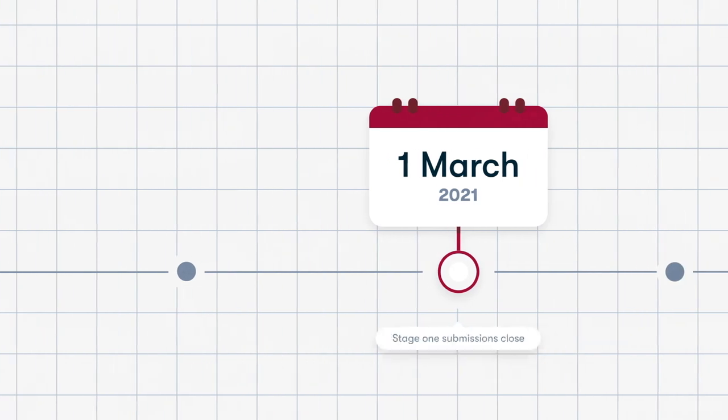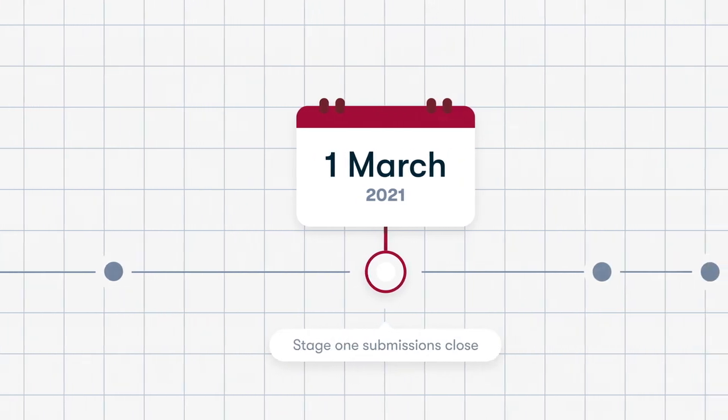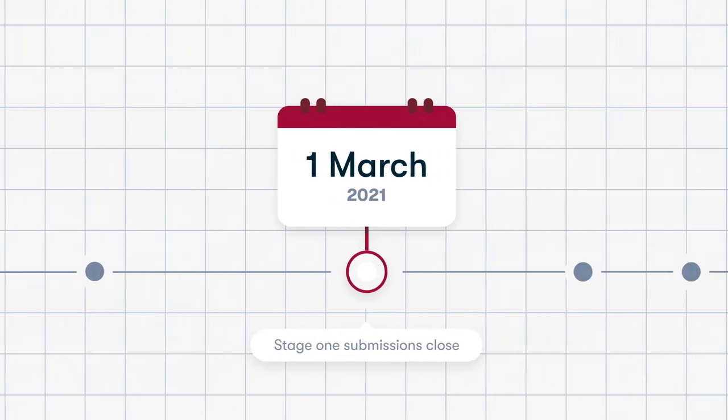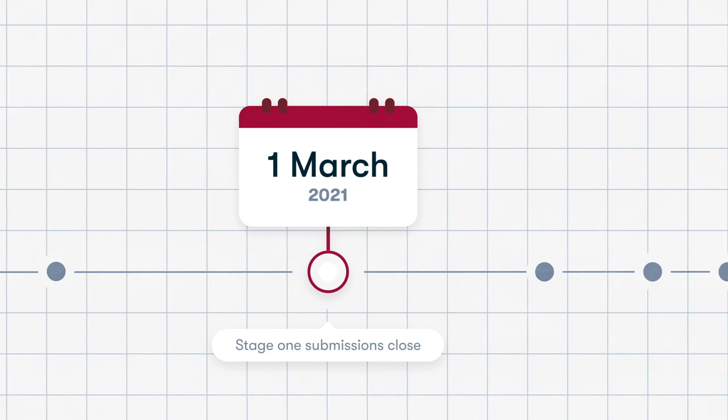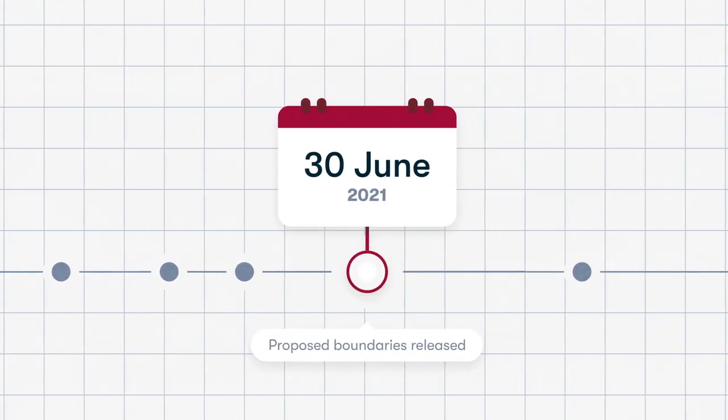When do I make a submission? Stage 1 submissions are open until the 1st of March 2021. The EBC will release proposed boundaries on the 30th of June.